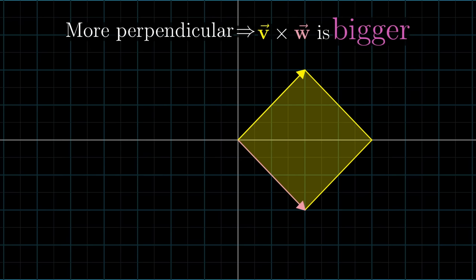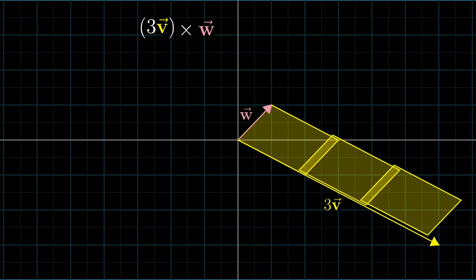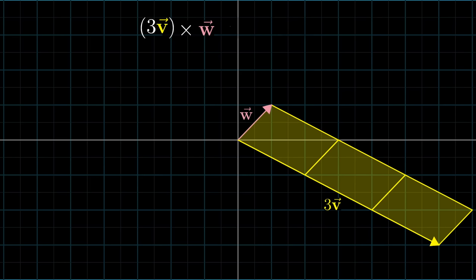Something else you might notice is that if you were to scale up one of those vectors, perhaps multiplying v by 3, then the area of that parallelogram is also scaled up by a factor of 3. So what this means for the operation is that 3v cross w will be exactly 3 times the value of v cross w.